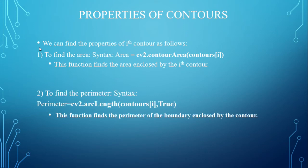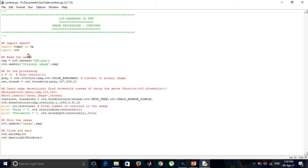Two widely used contour properties are area and perimeter. The syntax for finding the area of the ith contour is: area = cv2.contourArea(contours[i]), which finds the area enclosed by the ith contour. To find the perimeter: perimeter = cv2.arcLength(contours[i], True), which finds the perimeter of the boundary enclosed by the contour.